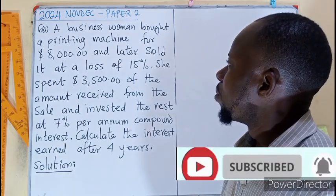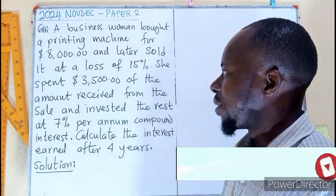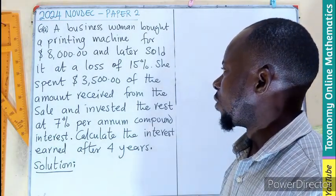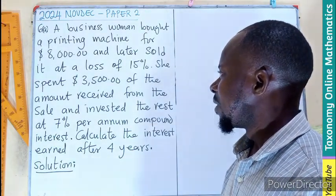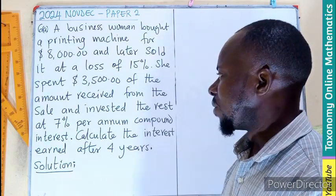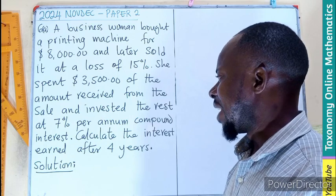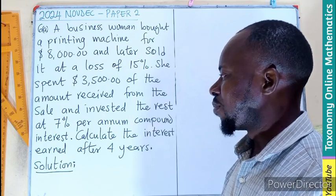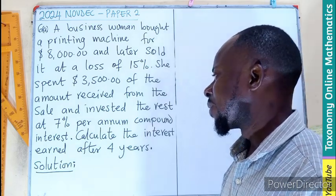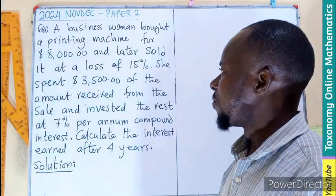A businesswoman bought a printing machine for $8,000 and later sold it at a loss of 15%. She spent $3,500 of the amount received from the sale and invested the rest at 7% per annum compound interest. We have to calculate the interest after 4 years.